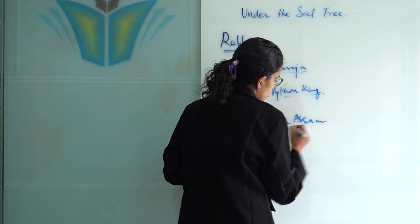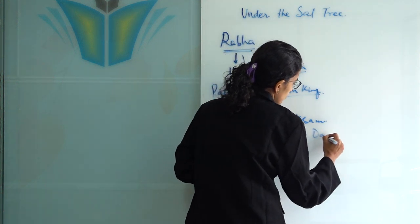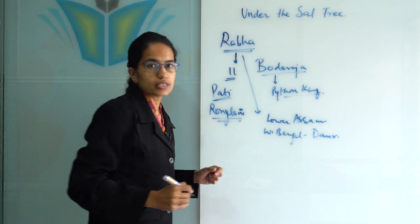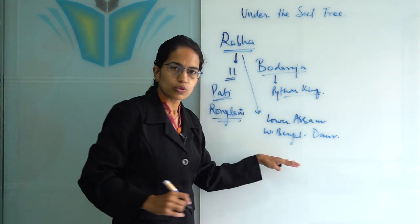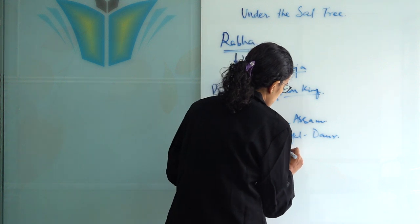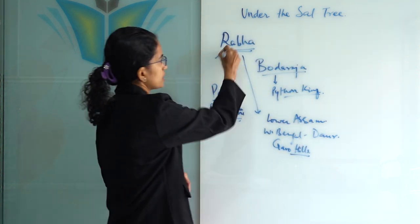In West Bengal, it is mainly the Dwar area, with Alipur Dwar being a major area where Rabha communities are seen, and also in the Garo Hills region of Meghalaya. These are the three main areas where the Rabha community is predominantly seen.